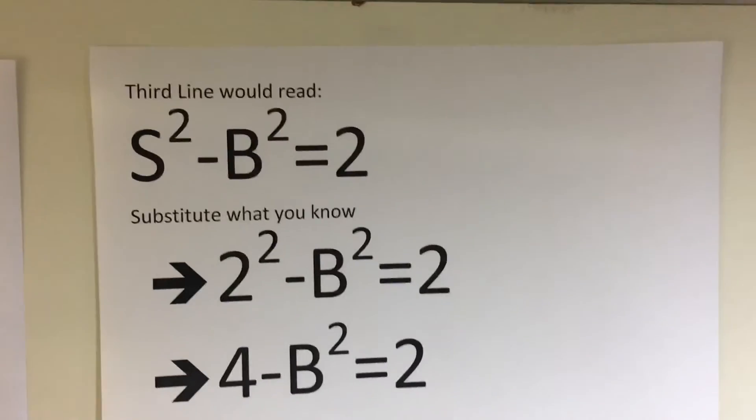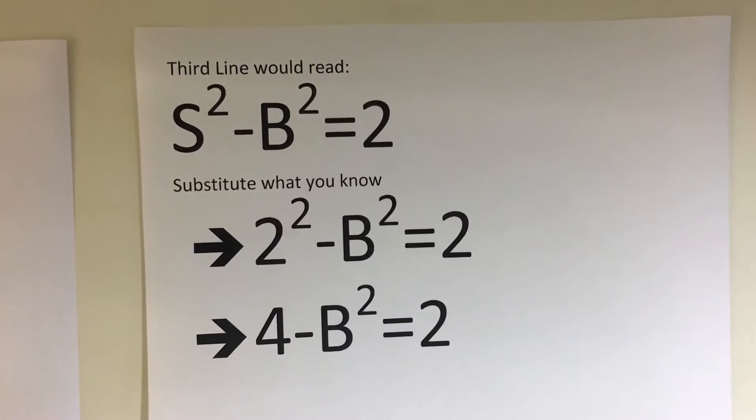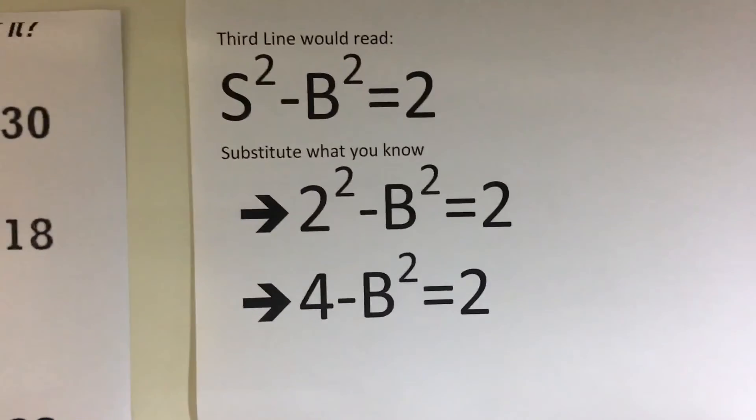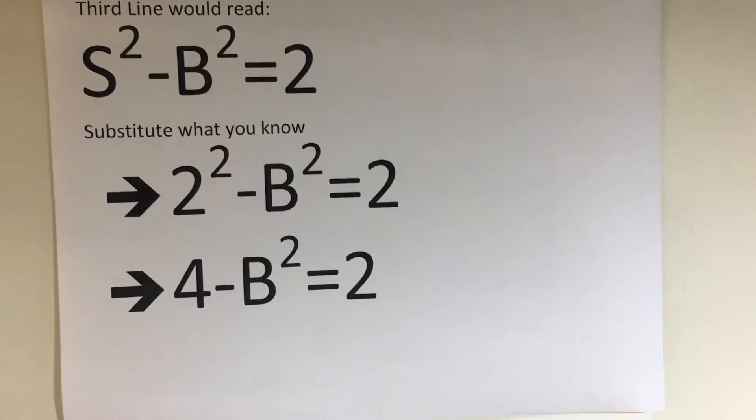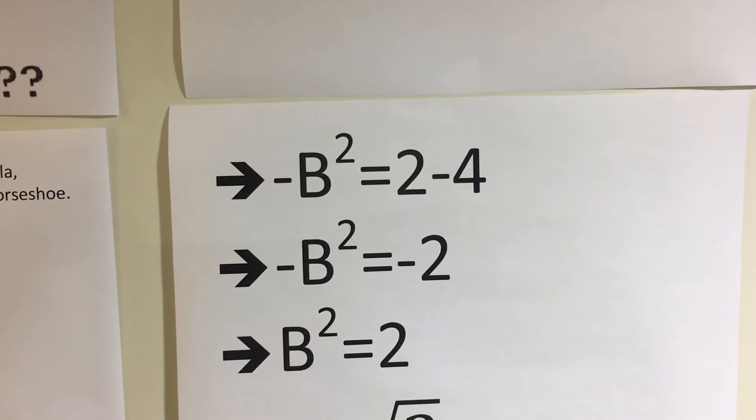That means the third line would read S squared minus B squared equals 2. Substituting what we know: 2 squared minus B squared equals 2. 4 minus B squared equals 2, which means negative B squared equals 2 minus 4.